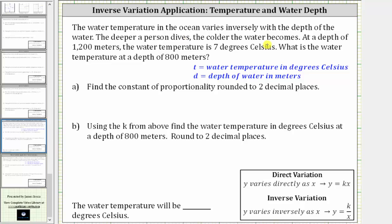The water temperature in the ocean varies inversely with the depth of the water. The deeper a person dives, the colder the water becomes. At a depth of 1,200 meters, the water temperature is seven degrees Celsius. What is the water temperature at a depth of 800 meters?